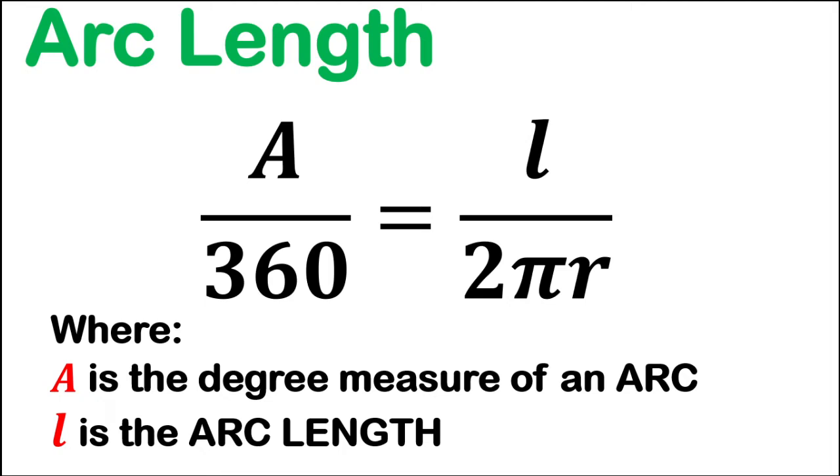The degree measure of an arc is different from the arc length. So every arc length will be determined using the given formula, A over 360, in which A is a degree measure of an arc, is equal to the arc length over the circumference of the circle.